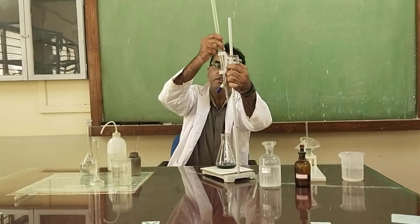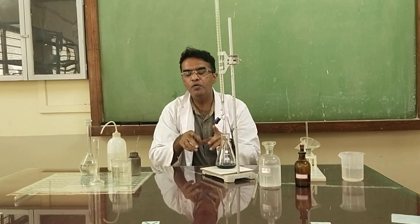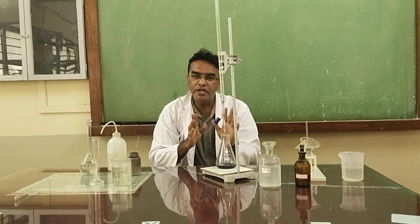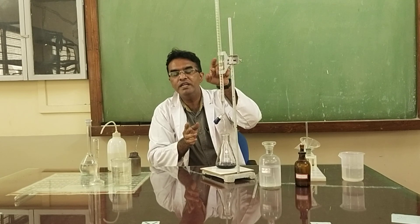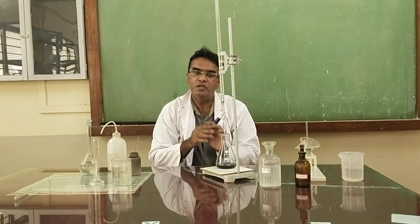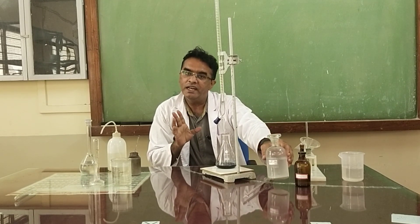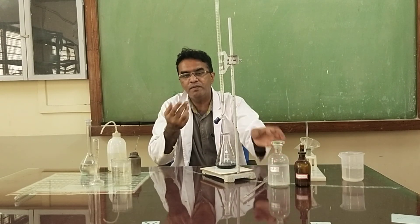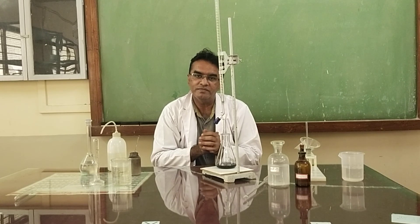Repeat two more trials — three trials total. Out of the three trials, take the least value and use that for further calculation. Using that titration value, we can calculate the total hardness of the given water sample using the suitable relationships, which will be explained during the online class. Thank you.